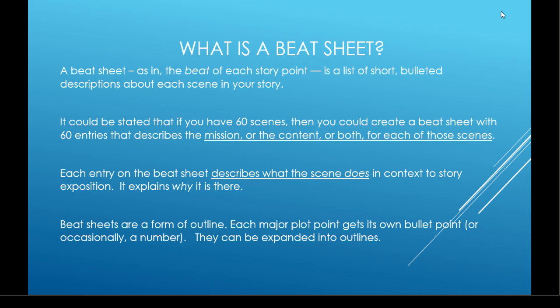These things can be expanded into outlines, but it can be as short as you want. It could be one sentence, one bullet point, or if you're a more talkative writer you can write more. I'm very verbose myself — it's tough for me to be concise. If you have 60 scenes, you could create a beat sheet with 60 entries that describes the mission, content, or both. Each entry describes what the scene does in context to the story.